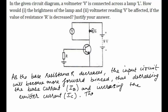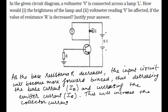As we know, the emitter current I_E is equal to the base current plus the collector current: I_E = I_B + I_C. So when R is decreased, the input circuit becomes more forward biased, which decreases the base current and increases the collector current I_C.